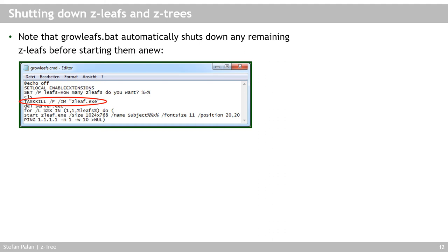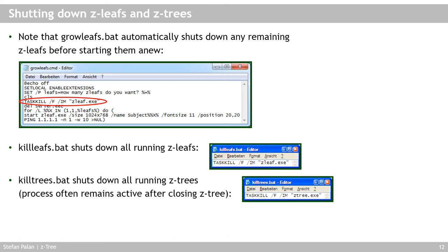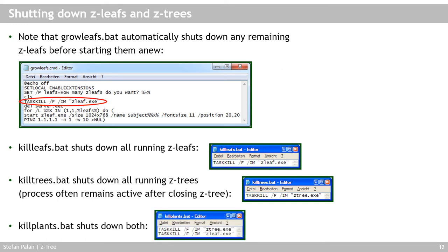The other batch files in the resources are: killleafs.bat, which closes down all zLeaves; killtrees.bat, which closes all zTree instances. You should normally close zTree normally, but sometimes when you close the zTree program, the zTree.exe process will keep running in the background — it seems to be a Windows bug. So you can click killtrees.bat to close zTree in the background. And killplants.bat will do both — closing both zTrees and zLeaves that you have running.